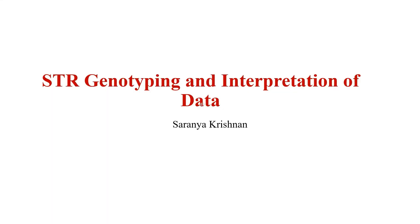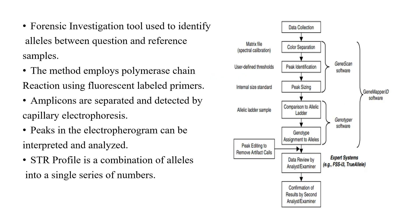Hi everyone, I'm Sharanya. In this video I'm going to talk about STR genotyping and interpretation of data. STR, or Short Tandem Repeat genotyping, is a forensic investigative tool used to identify the allele set at specific loci between a question and reference sample. STR genotyping employs polymerase chain reaction using fluorescent-labeled primers. The amplicons are separated and detected by capillary electrophoresis through fragment analysis. The peaks in the electrophoreogram can be interpreted and analyzed. An STR profile or STR genotype is a combination of all alleles from all loci into a single series of numbers.